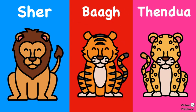Now I'm going to show you a series of pictures. Please look at each picture and say out loud whether you see a Shed (lion), Baag (tiger), or a Tindua (leopard). Please remember to use the Hindi word.